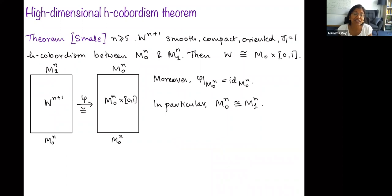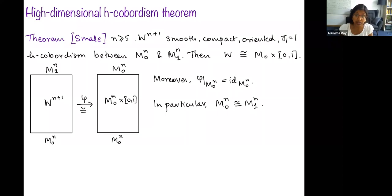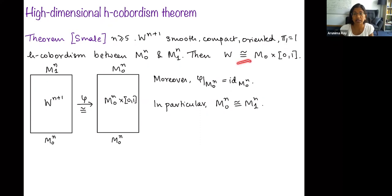So why do we care about h-cobordisms? One reason is that there's a high-dimensional h-cobordism theorem due to Smale. The slogan is that h-cobordisms up to homotopy look like products, and Smale's theorem says that in certain situations they actually are products. The dimension restriction is n ≥ 5, where n is the dimension of the boundary, so the cobordism itself is n+1-dimensional, smooth, compact, oriented, and also simply connected.